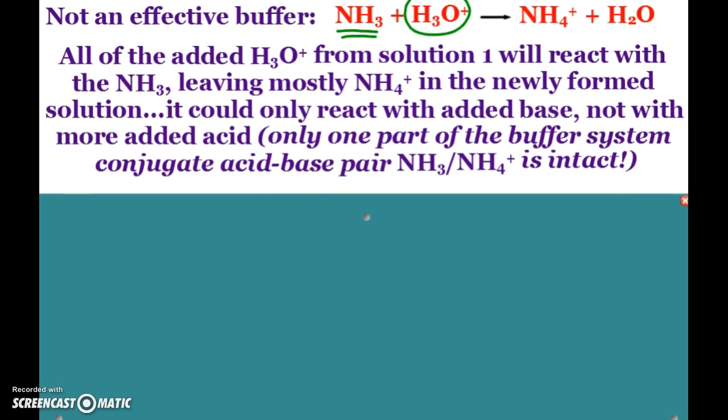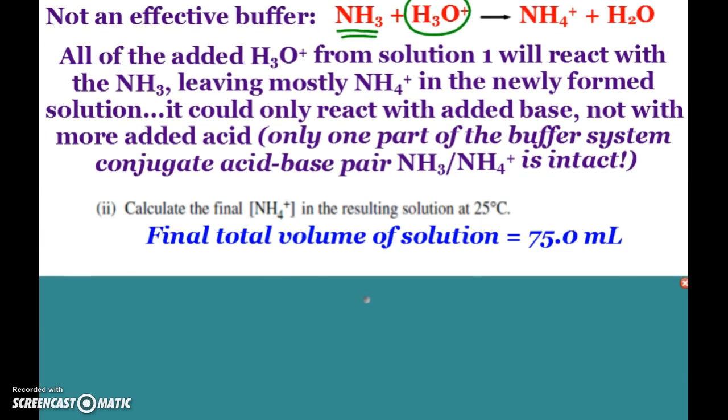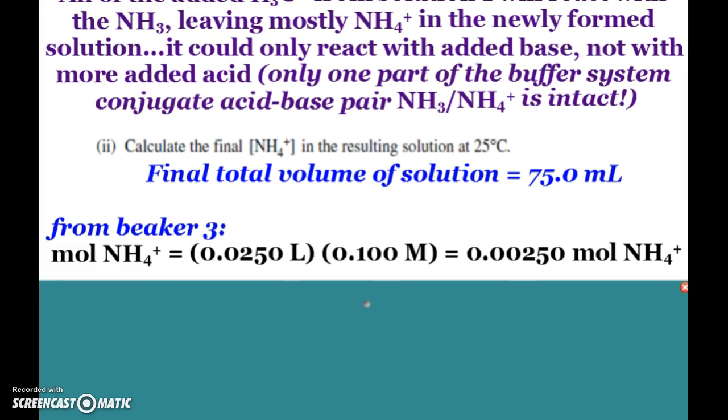All right, and then our last part here, again another tricky part. Calculate the final ammonium concentration in the resulting solution. Now you could get a nice gimme point here because if you did have the final total volume of the solution of 75 milliliters, if when you did your concentration moles divided by 0.075 liters, you could get a point there. But we had ammonium ions in our beaker 3 solution already, and in beaker 3 we had 0.025 liters and it was 0.1 molar, so we had 0.0025 moles of ammonium in beaker 3.